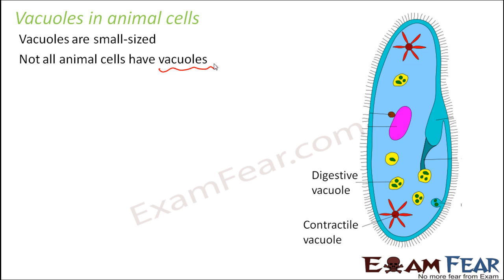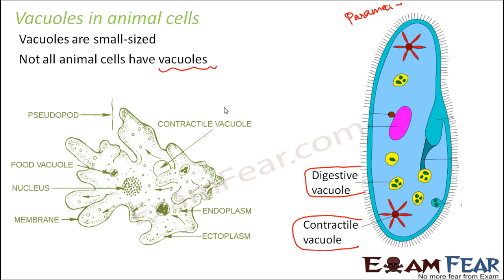In animal cells these vacuoles are present. For example, in paramecium we have a digestive vacuole and a contractile vacuole. The digestive vacuole helps in the process of digestion. Similarly, in amoeba we also have a contractile vacuole. Vacuoles are normally used for storage of food — some for digestion, some for contraction. Different vacuoles can have different purposes, and in animals they are not necessarily present in all of them.